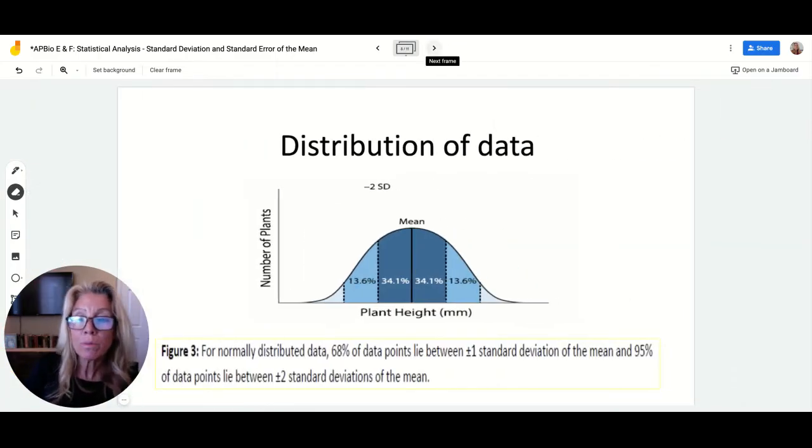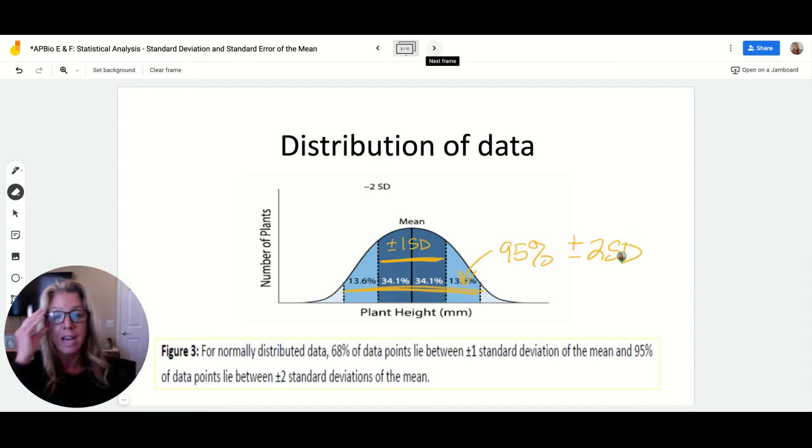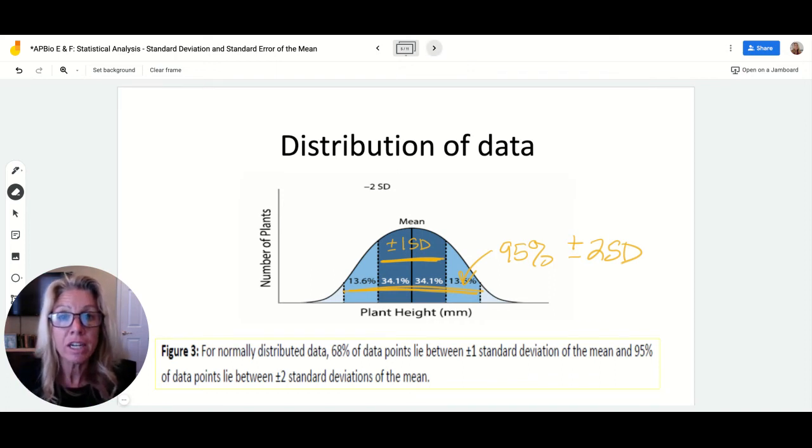Let me show you here. This normal distribution of data, you will find that 68% of your data is going to fall in plus or minus one standard deviation. A full 95% of your data is going to fall between plus or minus two standard deviations.